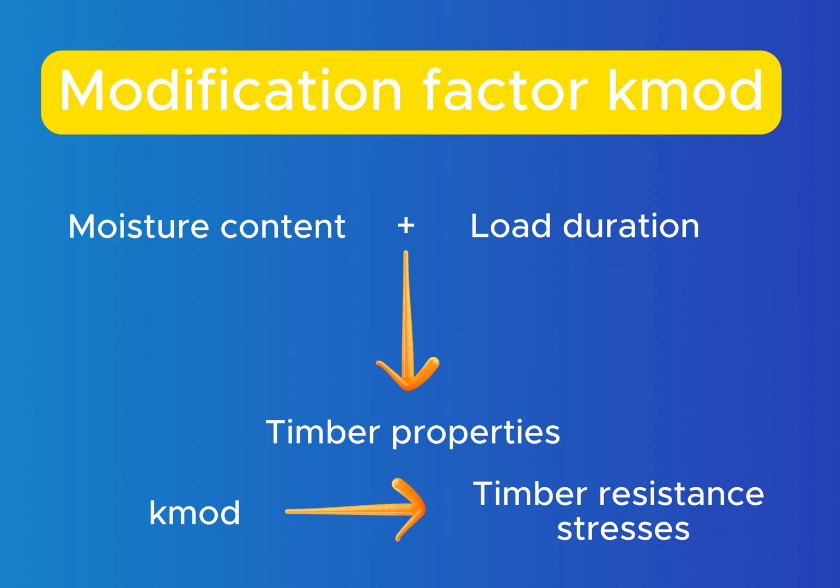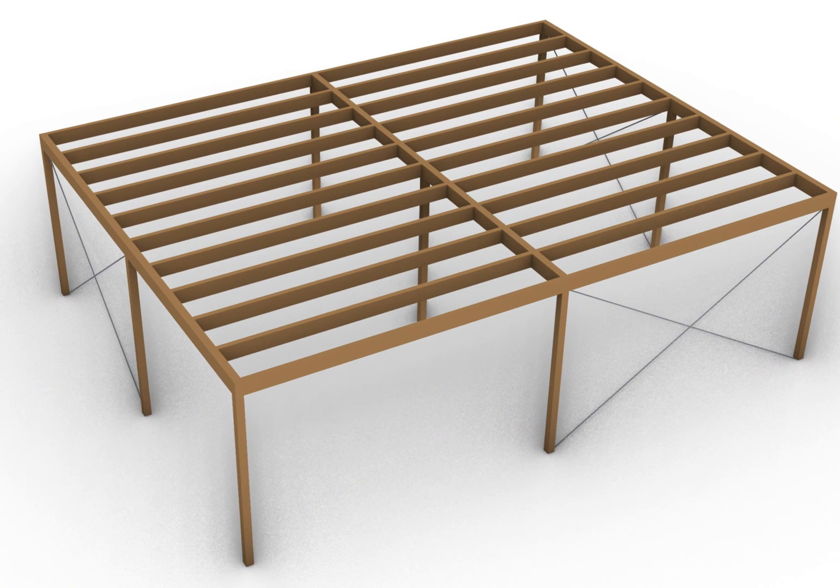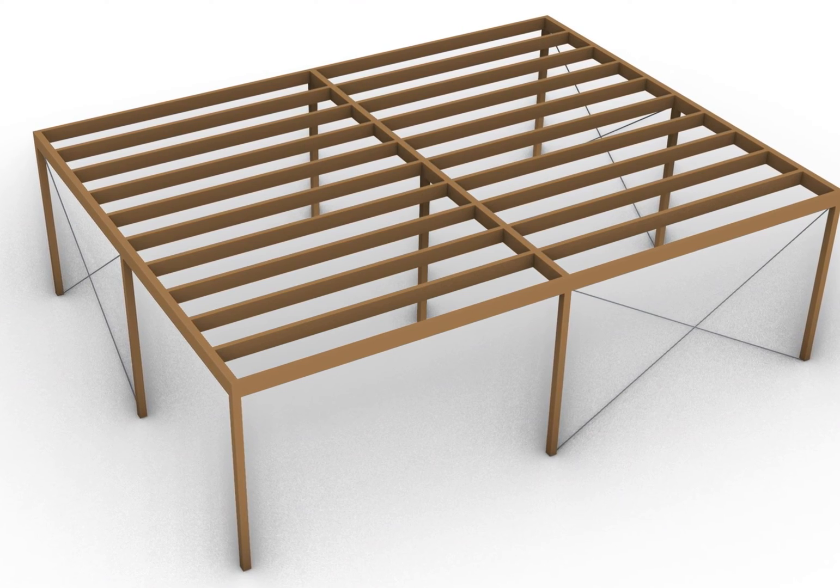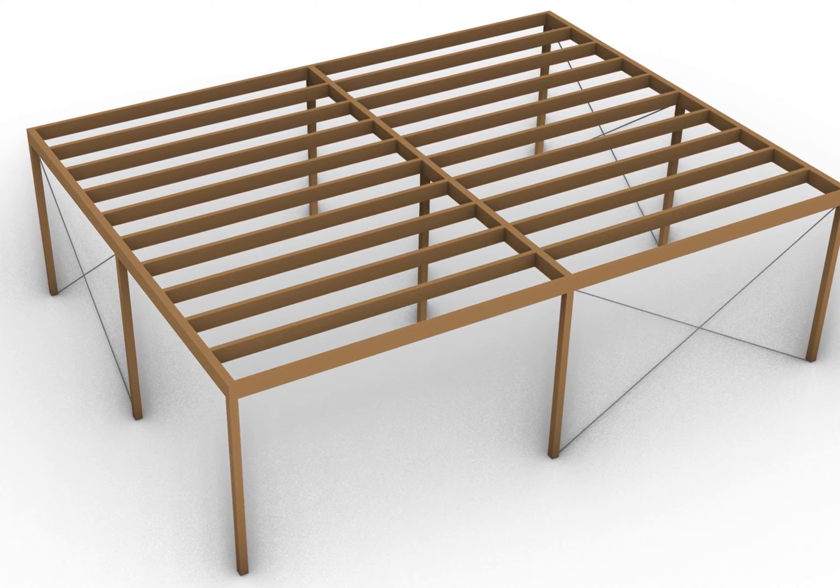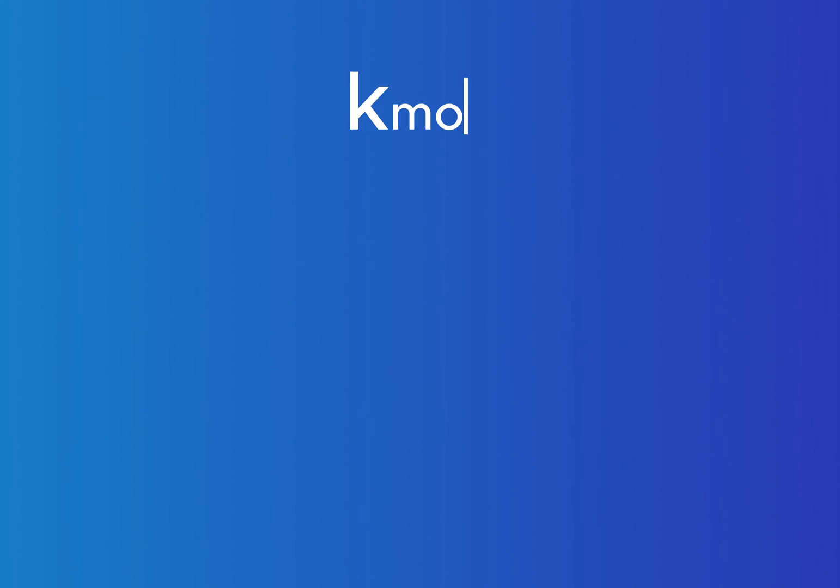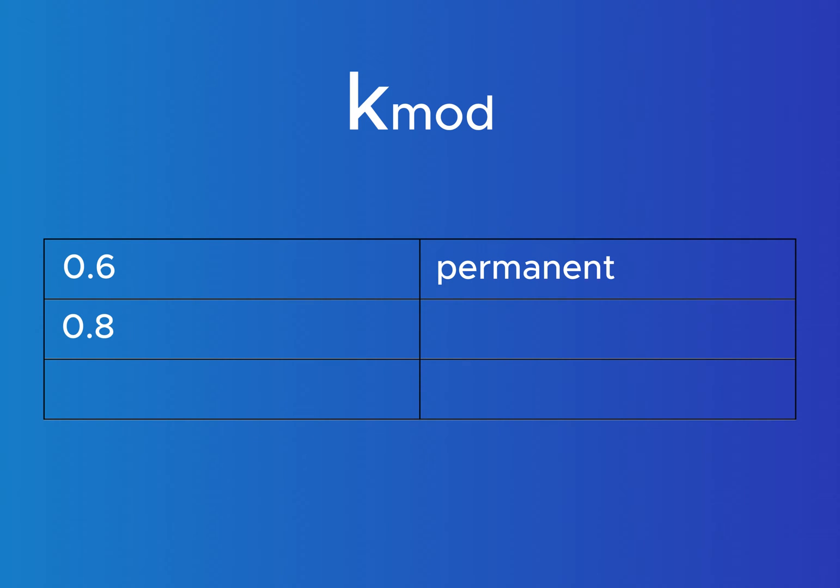Without going too much into detail, for a flat roof of a residential house where the beams are not exposed to weather, we can define K-Mod as 0.6 for permanent actions, 0.8 for medium term actions and 1.1 for instantaneous actions.